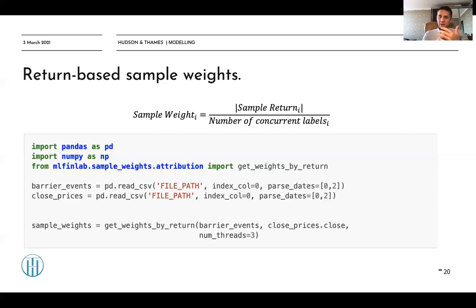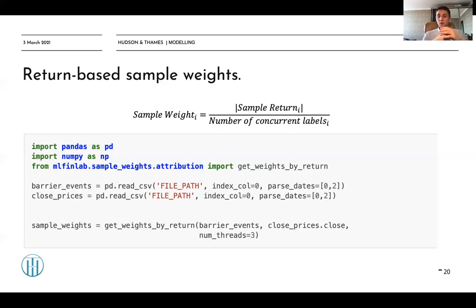Let's look at how the MLFinLab function is used for calculating sample weights. We take as input our barrier events or sample info sets — meaning we need the index of our labels and T1, when the label value was generated. For trend scanning that is the index of the top regression; for barrier events, the first time the barrier event was hit. We use close prices and can enable multi-core calculation by specifying the number of cores via the n_jobs parameter. The `get_weights_by_return` function generates return-based sample weights.